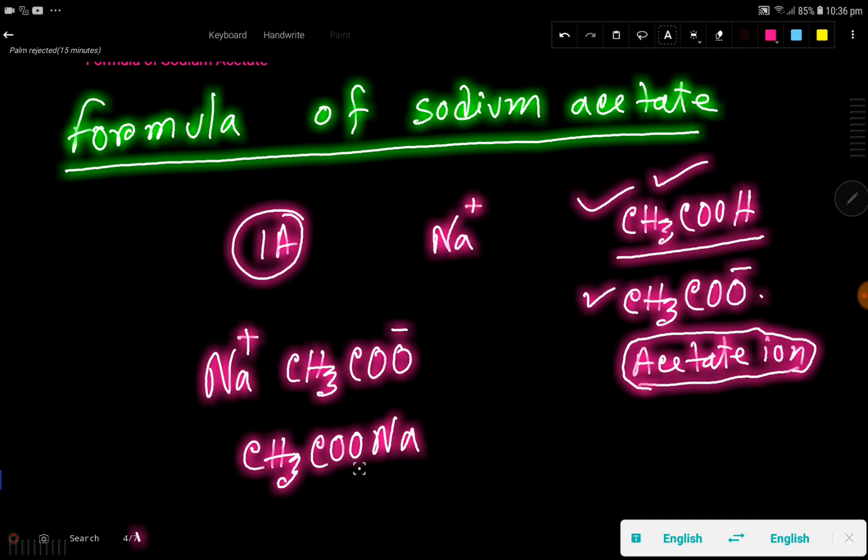So this is the formula, sodium acetate. We are just writing this positive ion here so that we can balance this positive and negative charge. So one positive charge will cancel one negative charge, and the overall charge for sodium acetate will be zero. This is the formula.